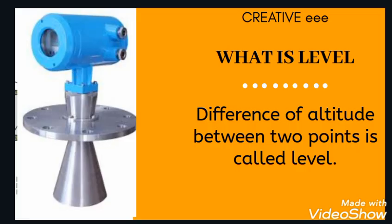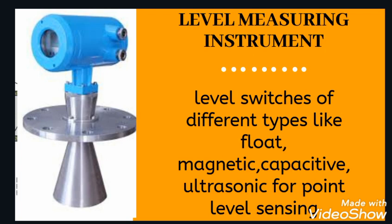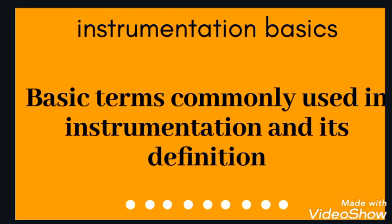What is level? Difference of altitude between two points is called level. We check the difference between two points and that difference will be our level. Its unit is meter or foot, or sometimes its unit is in percentage. Level measuring instruments include level switches of different types like float, magnetic, and capacitive for point level sensing. There are other continuous level instruments like capacitive, ultrasonic, radar, infrared, and silo pilots, which show readings in percentage.